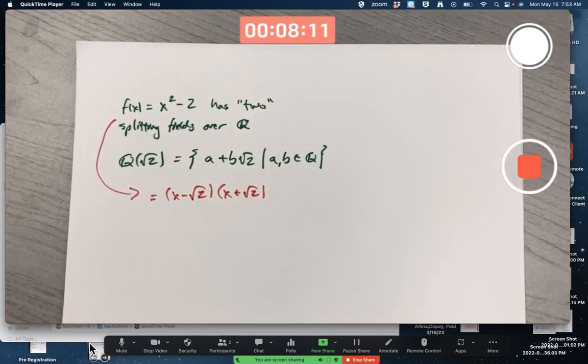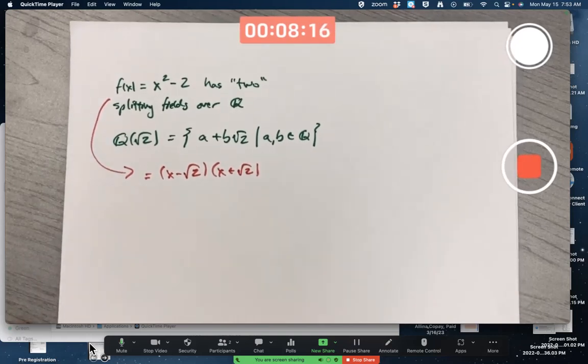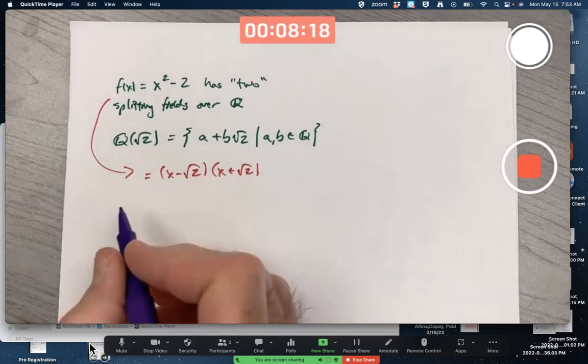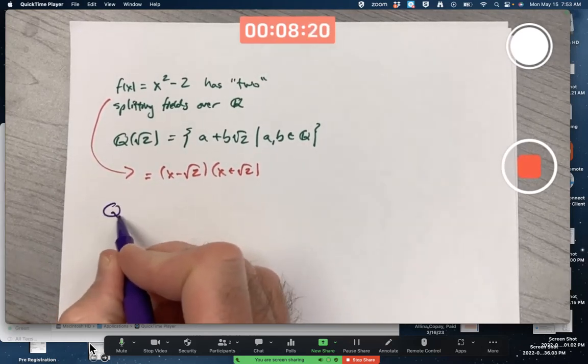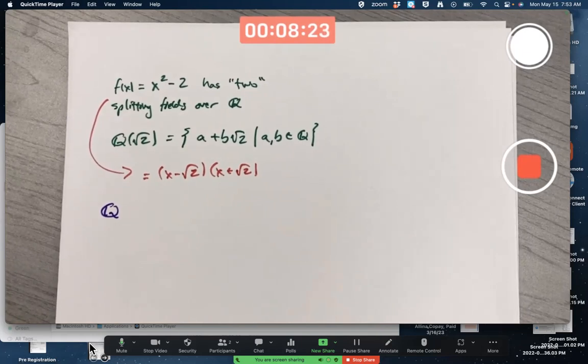But I've also said that there's another splitting field, isomorphic to this one, that can be thought of as a field extension of the rationals, though it's a bit weird to do so.